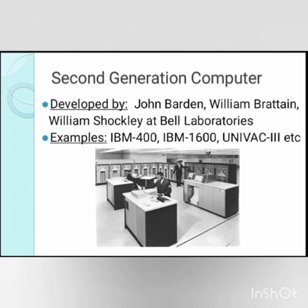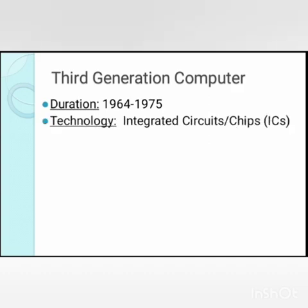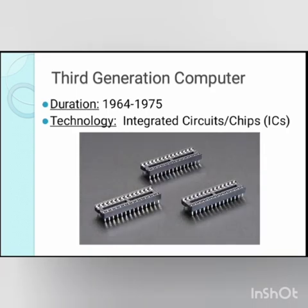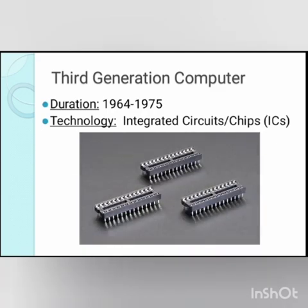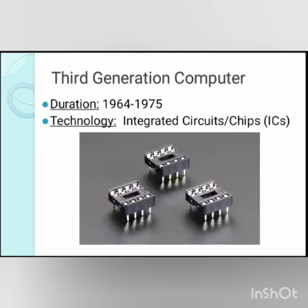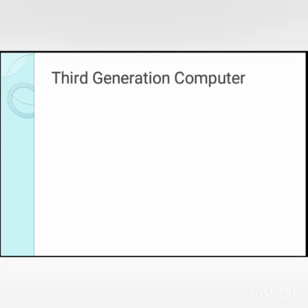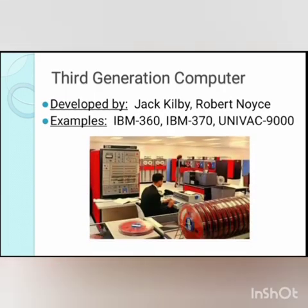1964 to 1975 is the period of third generation computers. These computers were based on integrated circuits, or ICs. An IC was a single component containing a number of transistors. Transistors became smaller and became part of a silicon chip called a semiconductor. Silicon chips can carry electronic signals that can read and execute billions of instructions per second. Computers use chips to store and process data in the main processor.